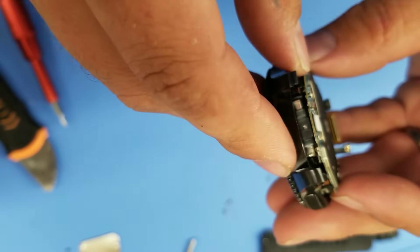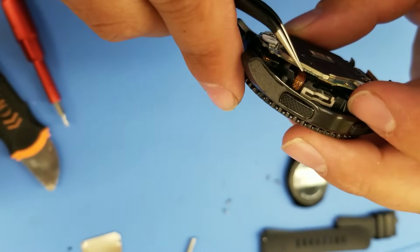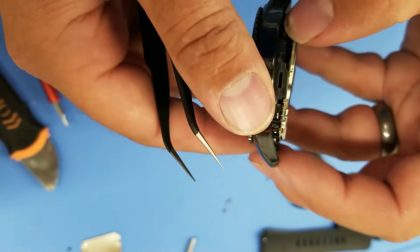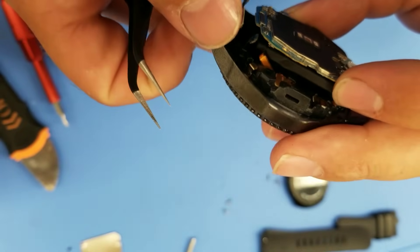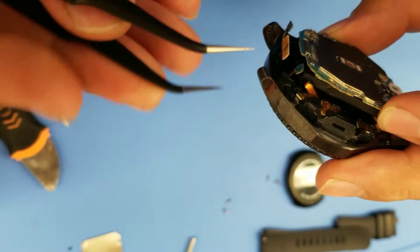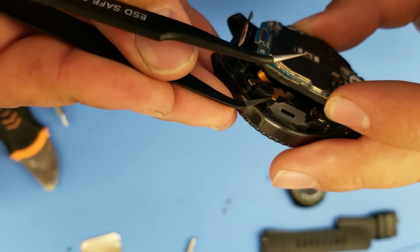But you don't want to pull up on it. It's connected by a cable here and the battery cable here. So you want to take your tweezers and pry up on the connection of the battery here.